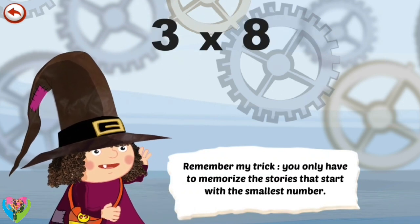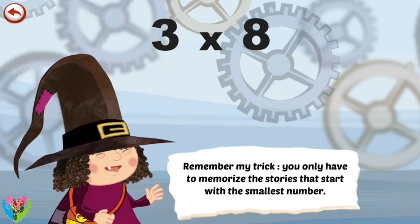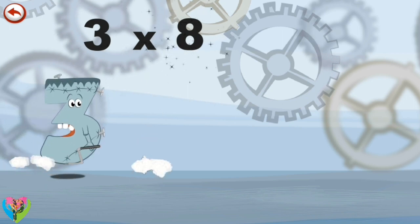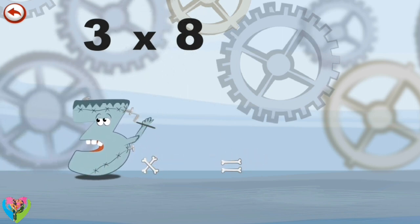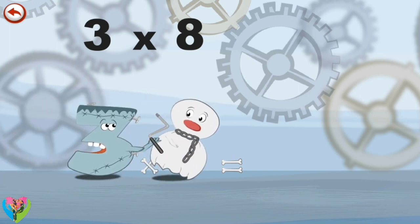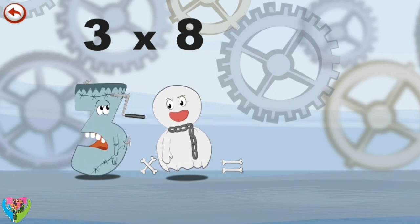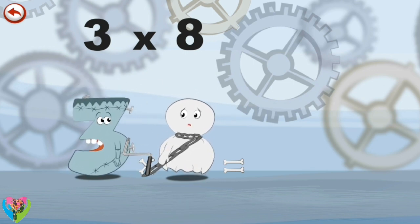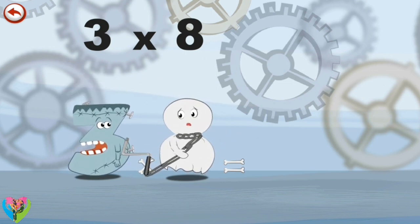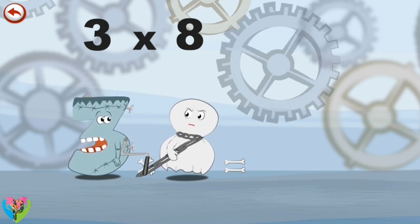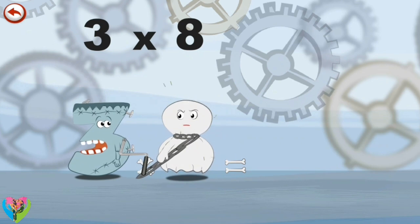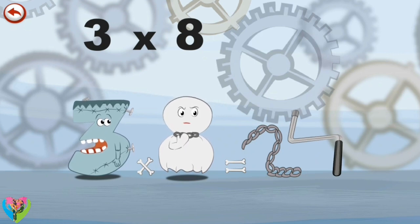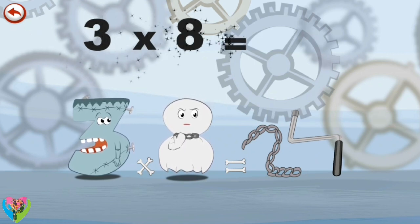Remember my trick. You only have to memorise the stories that start with the smallest number. What's the story of 3 times 8? Threekinstein is cleaning his ears with a crank candle, but Spooky 8 the ghost makes him jump and he hurts himself with the tool. Curious, he throws down the crank candle. It lands on Spooky 8's chain and stops him from moving. Spooky 8 pulls as hard as he can to get free. He finally manages to break the chain in the shape of a 2, which whisks away the crank candle in the shape of a 4. 3 times 8 is 24.